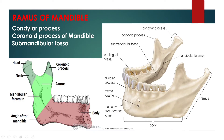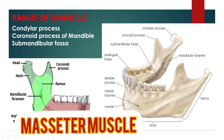The ramus of the human mandible has four sides, two surfaces, four borders, and two processes. On the outside, the ramus is flat and marked by the oblique ridge. At its lower part, it gives attachment throughout nearly the whole of its extent to the masseter muscle.